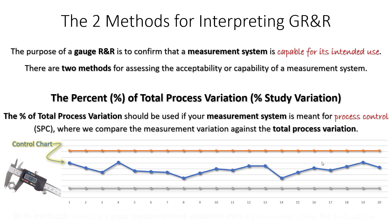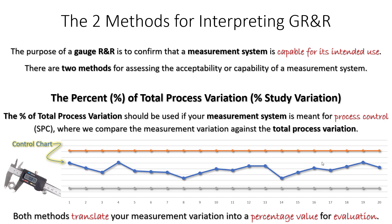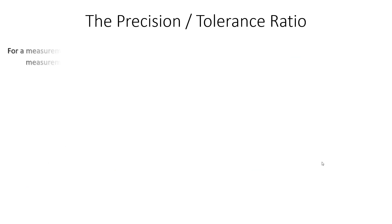The good news is that no matter which method you use, both are evaluated the same way. Both the precision tolerance ratio and the percent of total process variation translate your measurement system variation — your gauge R&R value — into a percentage that you evaluate. The evaluation process is the same regardless of which method you use; you just have to pick the right method before you get started. Let's start with the precision tolerance ratio.